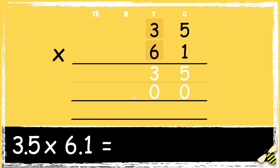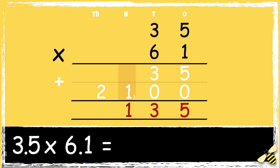Then we multiply 6 tens by 3 tens. 6 times 3 is 18. We need to add the 3 hundreds. So 18 add 3 is 21. The next step is to add the two answers together. So 5 add 0 is 5, 3 add 0 is 3. Then we have 1 in the hundreds column and 2 in the thousands column.